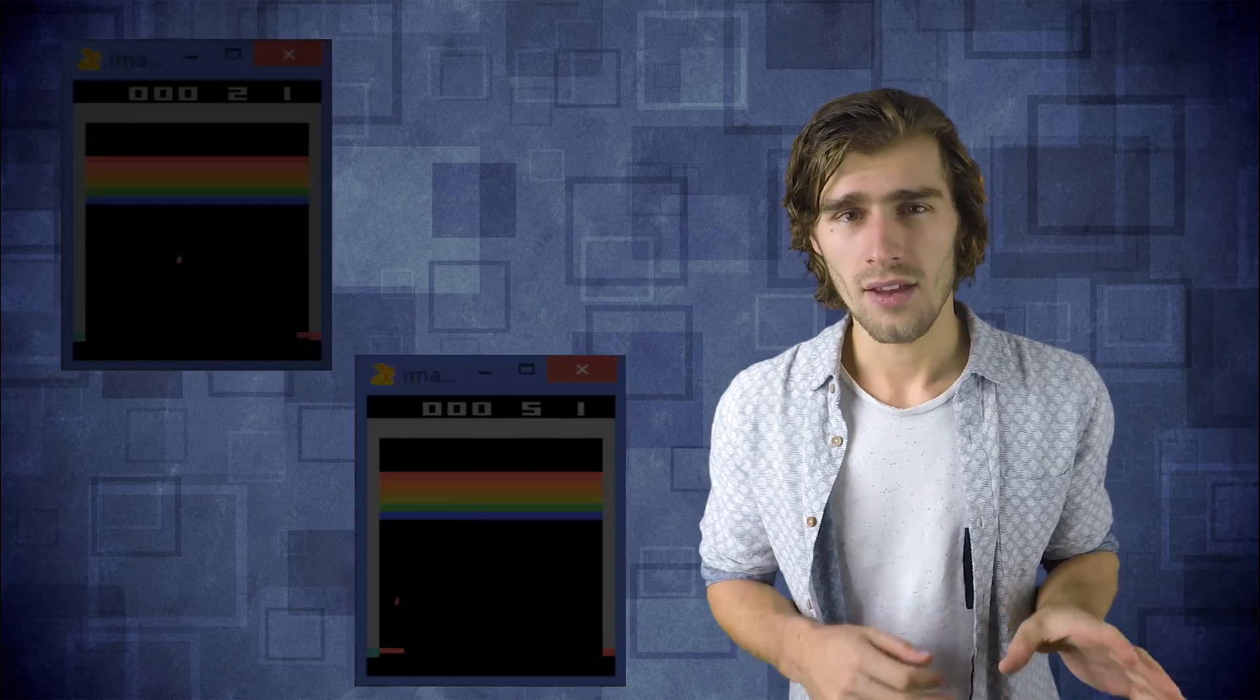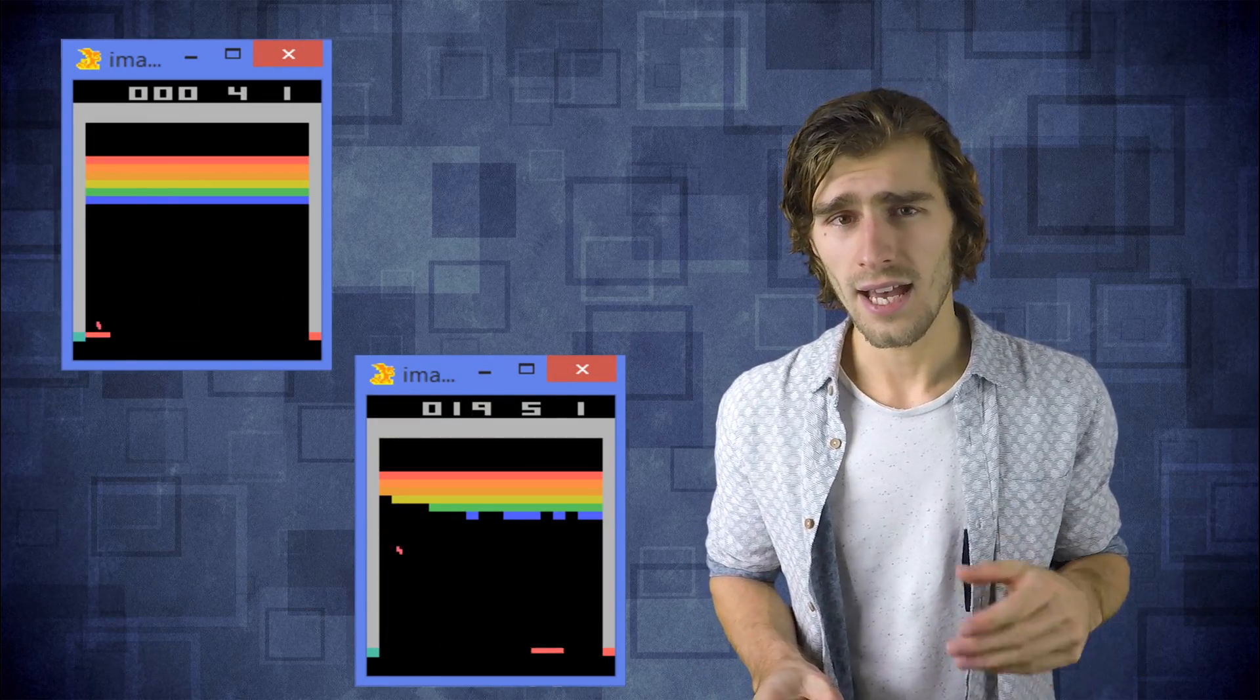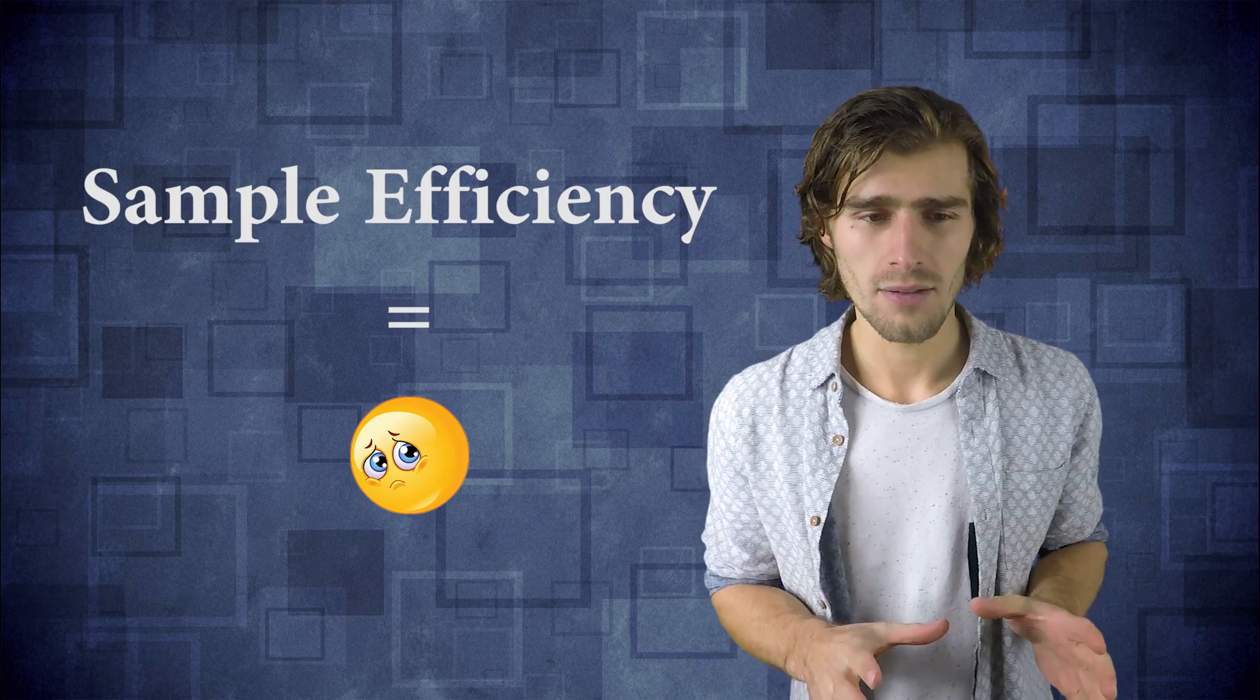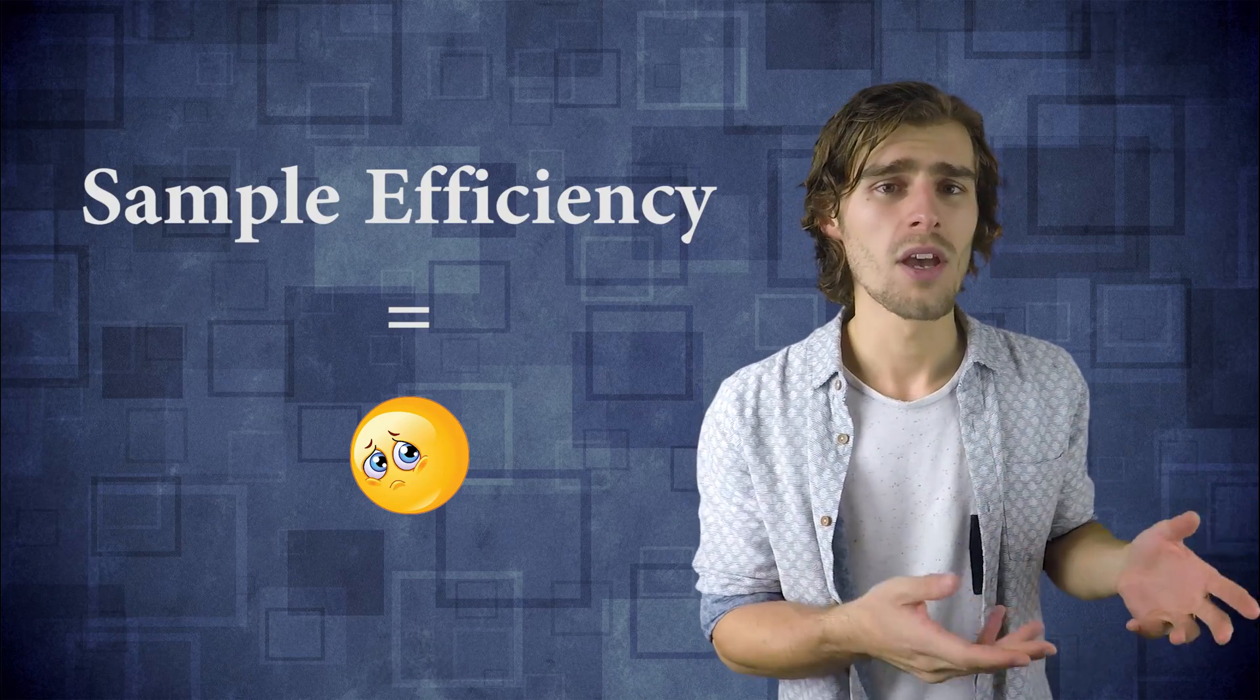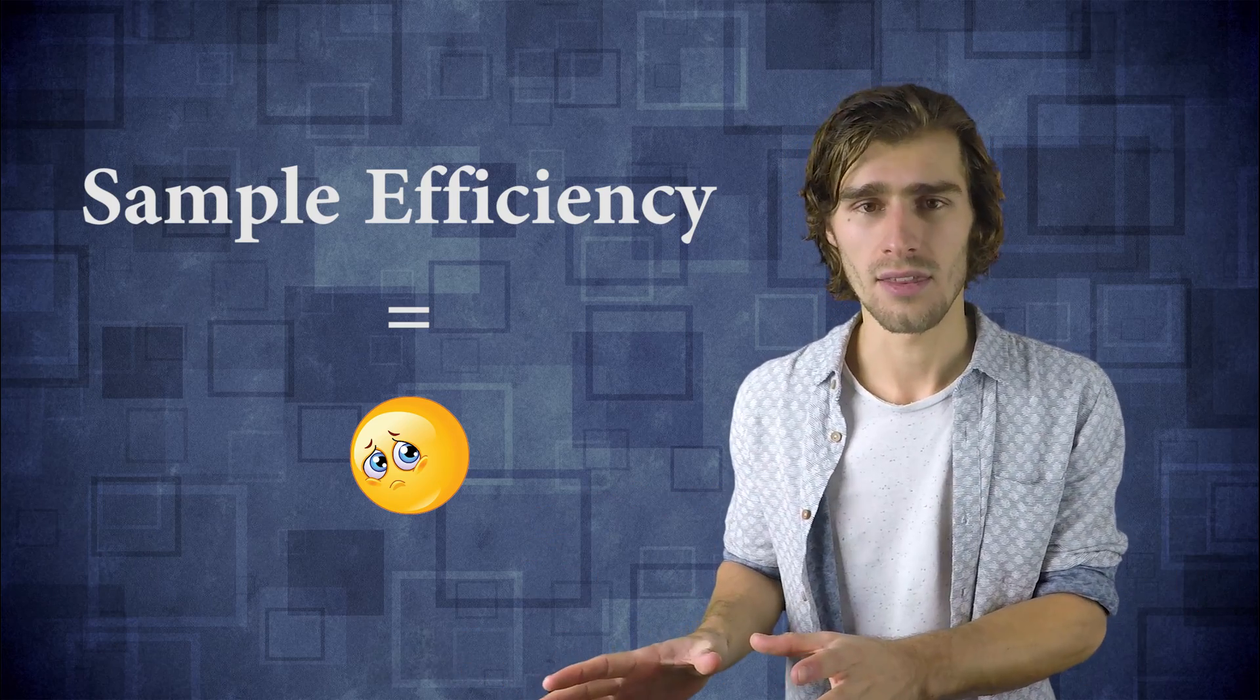These algorithms have shown some very impressive results in a wide variety of tasks that has caused many people to claim that we might be seeing the very early seeds of general AI. But despite these impressive achievements, we are still very far away from achieving anything close to human level learning performance. Our algorithms are very good at general learning but they have what we call a very bad sample efficiency, which means you need to give them a lot of training frames before they figure out what behavior is actually desired.